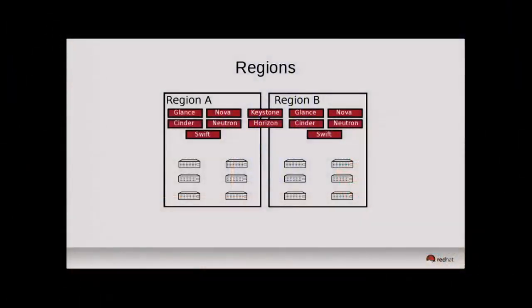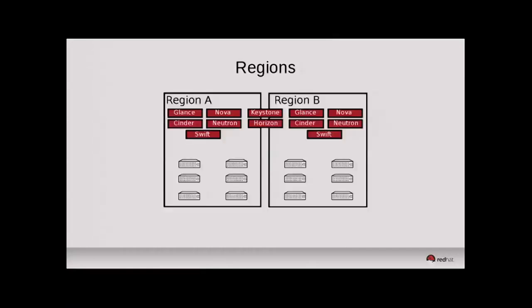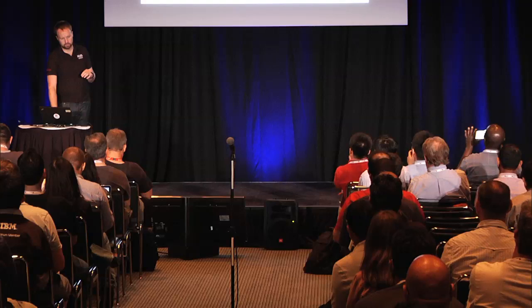In terms of what a deployment looks like: in the first example, we have both a shared Keystone and Horizon, and then separate Glance, Nova, Cinder, Neutron, and Swift installations on each side of the cloud. The next example is without the shared Keystone.